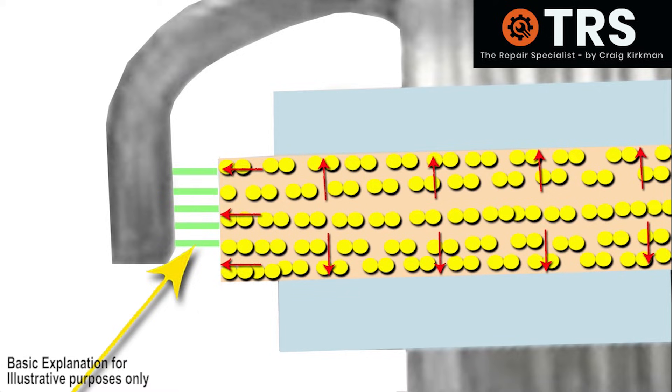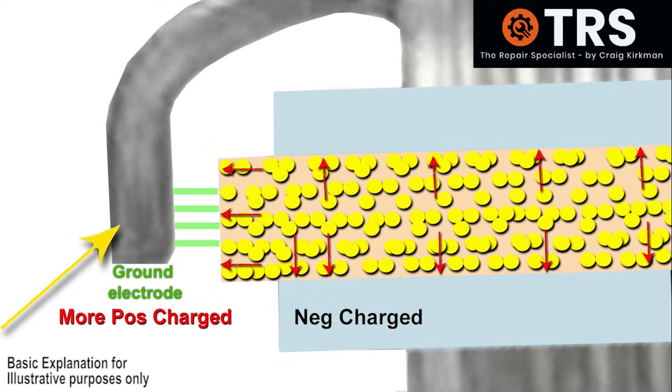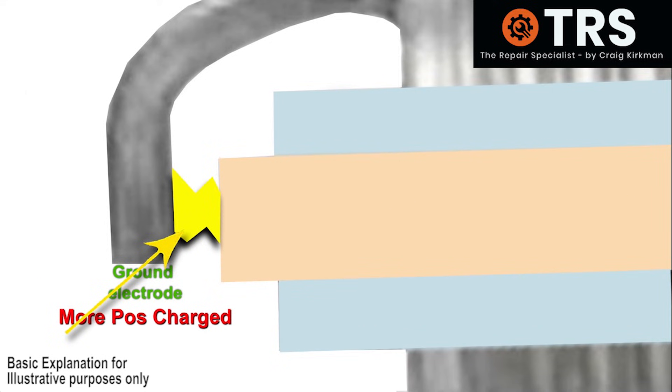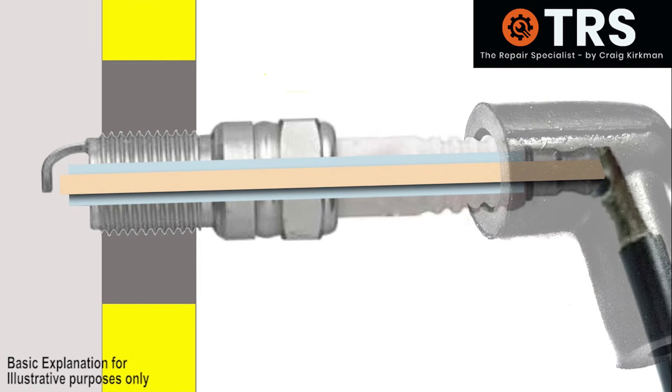Now these trillions of negatively charged electrons can sense ground. Because this ground is more positively charged than themselves, they arc across the gap. As they arc across the gap, that's creating the spark. They instantly move through the outer grounded area of the spark plug and into the engine body.